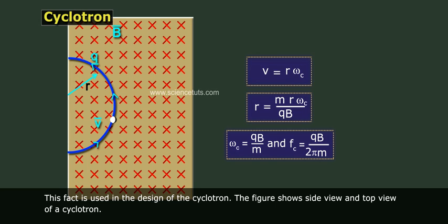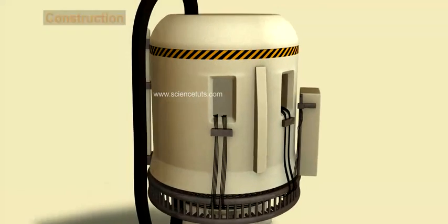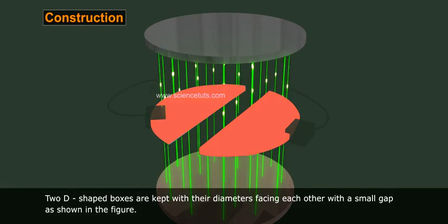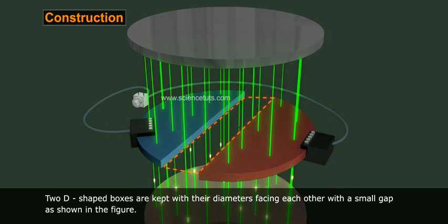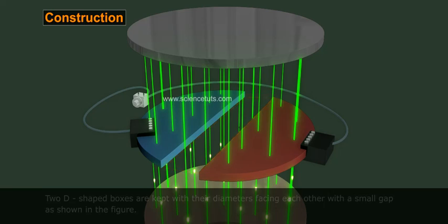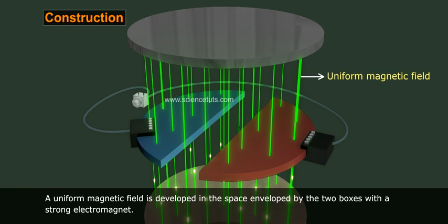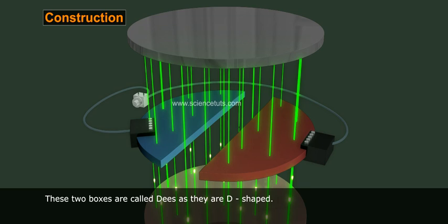The figure shows side view and top view of cyclotron. Construction: Two D-shaped boxes are kept with their diameters facing each other with a small gap as shown in the figure. A uniform magnetic field is developed in the space enveloped by the two boxes with a strong electromagnet. These two boxes are called D's as they are D-shaped.